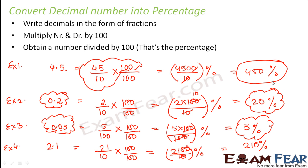Like 4.5 is 450%, 2.1 is 210%. So basically what we conclude is that for decimals less than 1, percentage is less than 100%. For decimals greater than 1, the percentage is greater than 100%. So this is our observation.